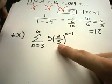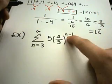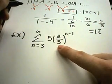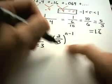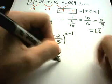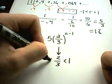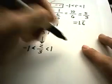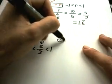So again, I look at this and I think, okay, 2 thirds, I've got a number raised to a variable power. This clues me in that it's a geometric series. Again, this number 2 thirds is between positive 1 and negative 1. So that means it is going to converge.